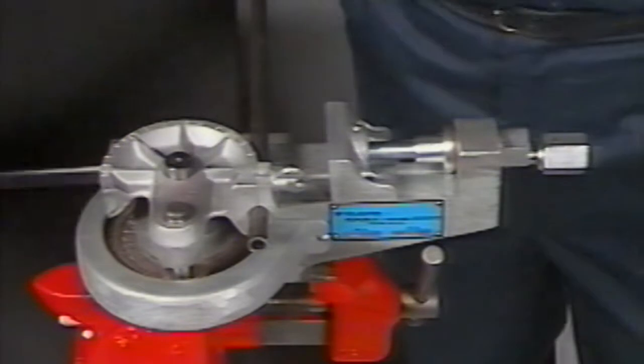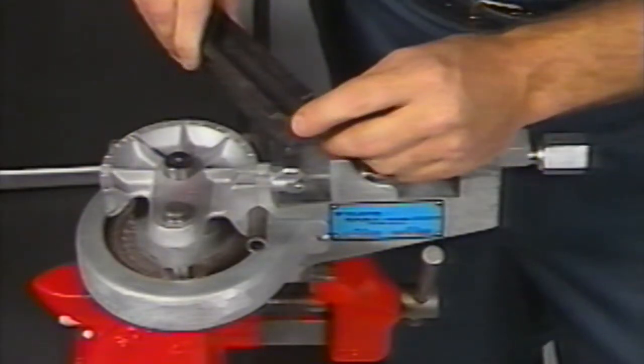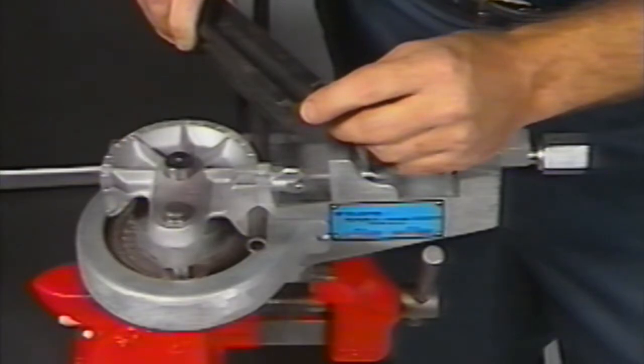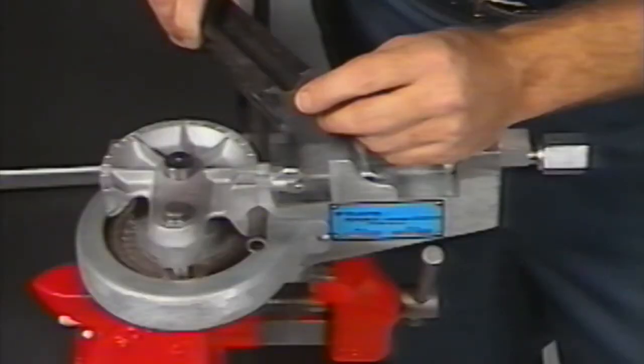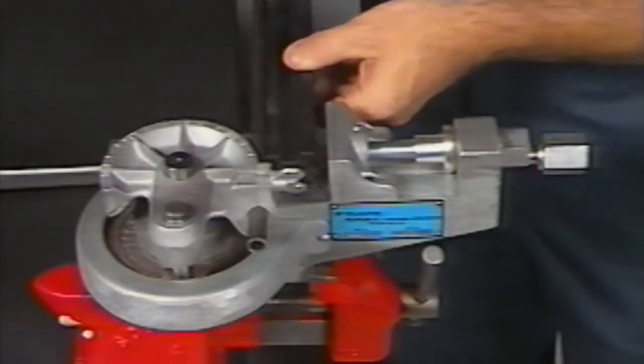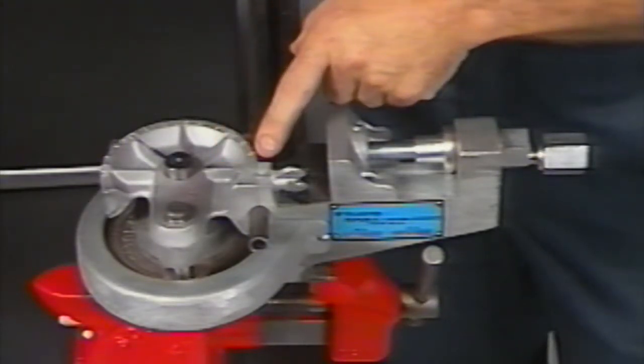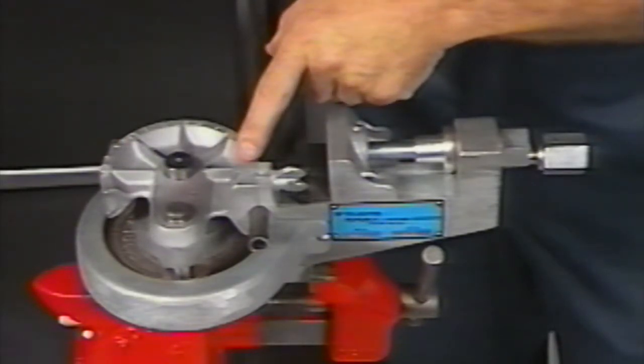Step three, select the proper groove and the combination slide block to suit the OD of the tube. In this case, size eight. Each tube size is stamped on the end of the slide block. Place the slide block on the bender frame between the vice plate and the radius block. Align the number eight groove and the combination slide block with the tubing and position the end of the slide block adjacent to the zero degree mark on the radius block.